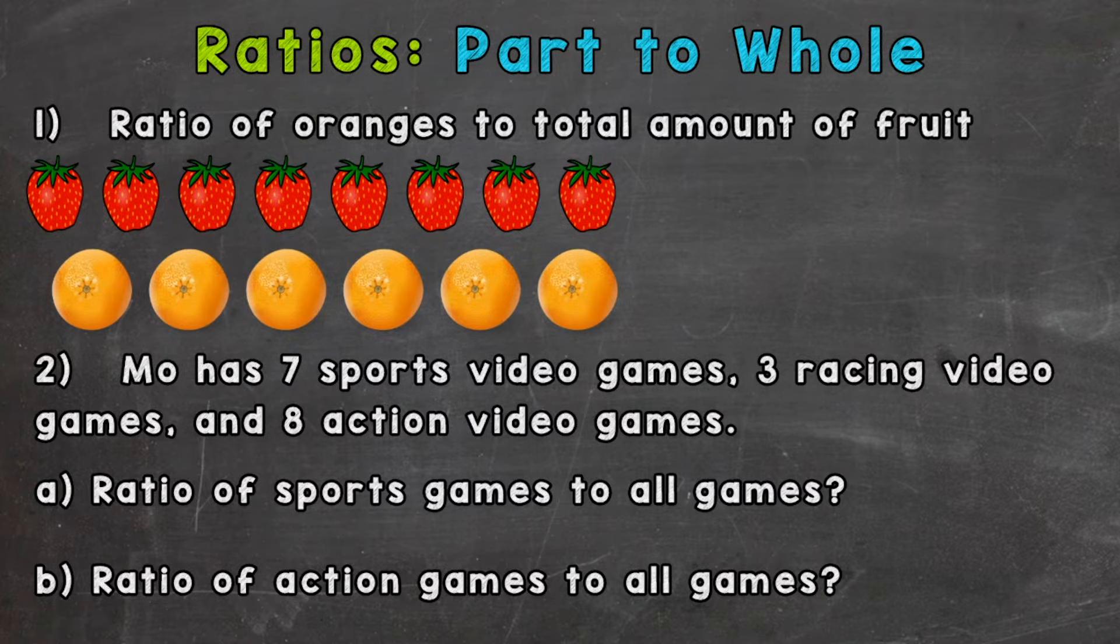We're going to take a look at the number of a certain part compared to the total number of the group, the whole group. Let's take a look at number one as our first example here. We need the ratio of oranges to the total amount of fruit. Remember in ratios order matters, so oranges comes first here in our problem so it needs to come first in our ratio.